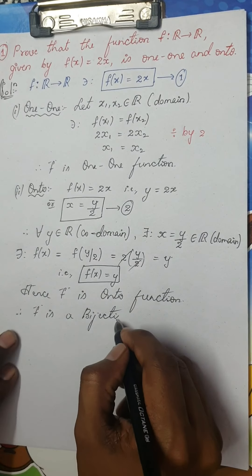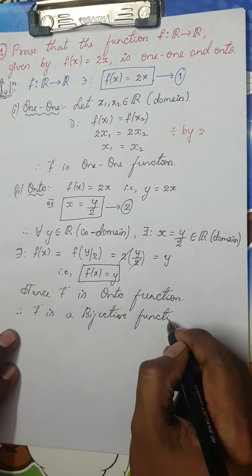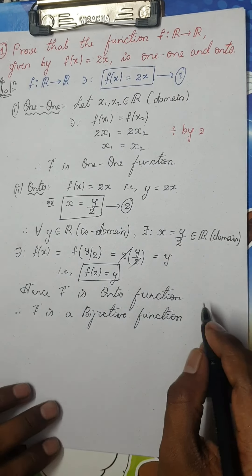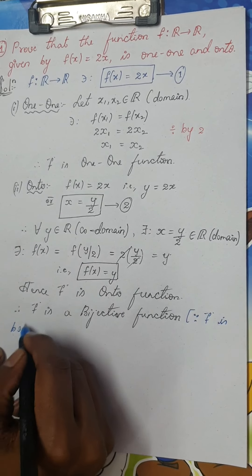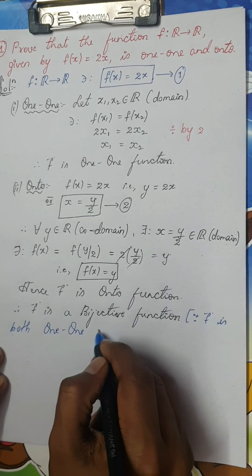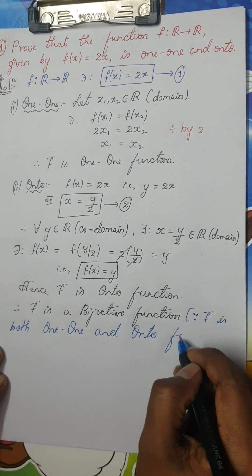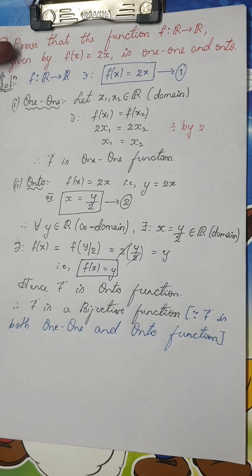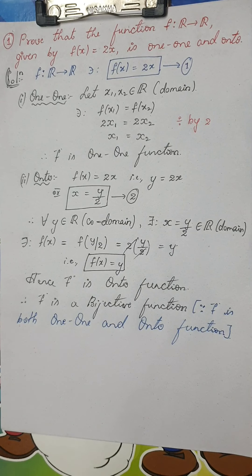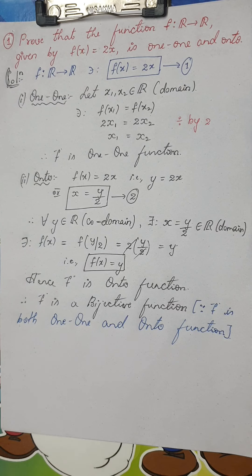You have to write this conclusion clearly — bijective function — because f is both 1-1 and onto. This question is one of the easiest 5-mark questions. It will take you less than 5 minutes to solve. Now there is one similar assignment question: Show that the function f from N to N given by f(x) = 2x is 1-1 but not onto. The previous question was from R to R; this question is from N to N.